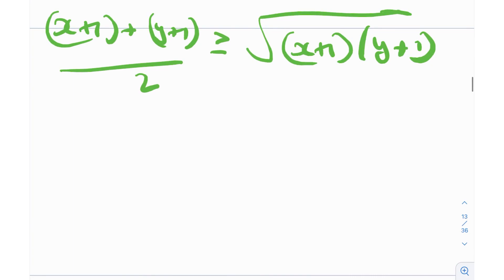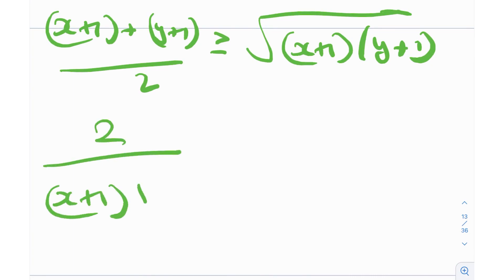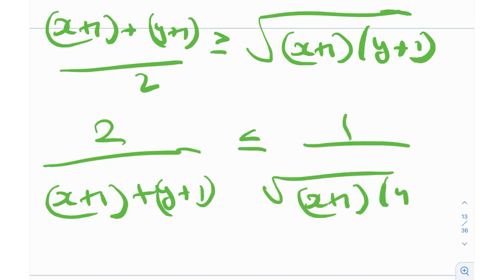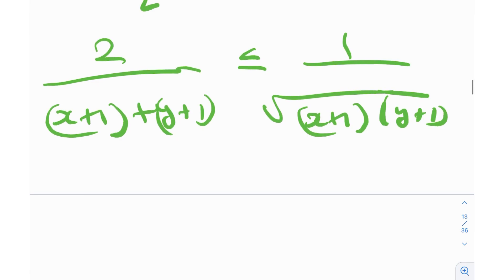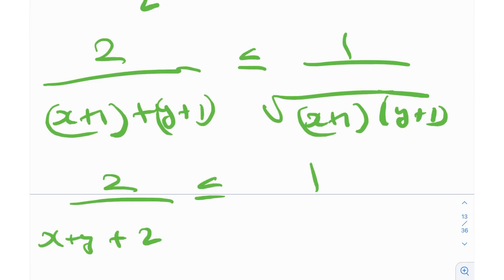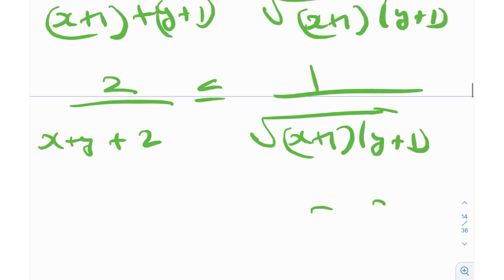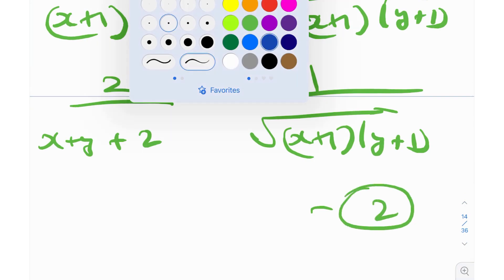Flipping over: 2/[(x+1) + (y+1)] ≤ 1/√((x+1)(y+1)), or in other words 2/(x + y + 2) ≤ 1/√((x+1)(y+1)). Let's label this equation number 2.